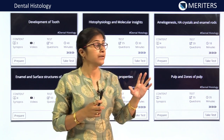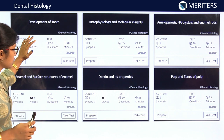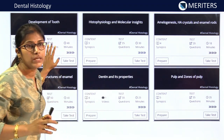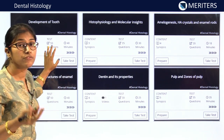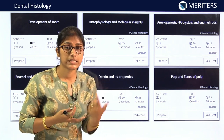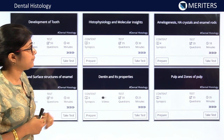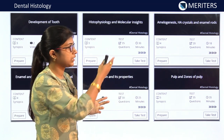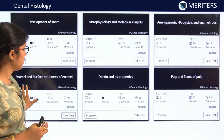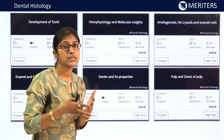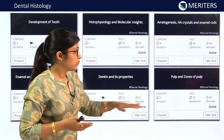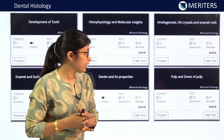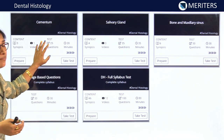You can find these tasks under the 'Guided Trip' section in the Meritor's app — select the subject dental histology and you'll get these tasks there. The tasks cover: development of tooth histophysiology and molecular insights, amelogenesis (recent NEET IBQ on stages), enamel and surface structures, and dentin and its properties. Two tasks are there for development; amelogenesis has a direct IBQ from recent NEET.